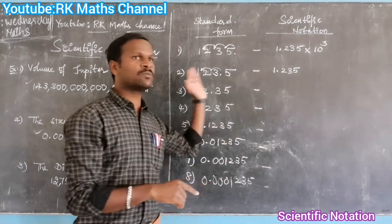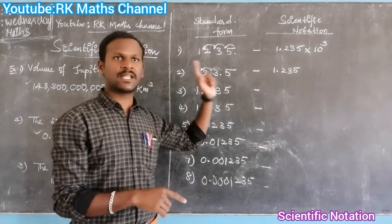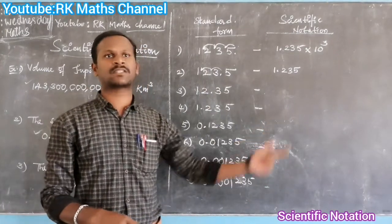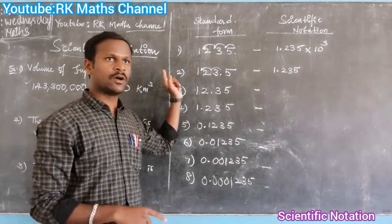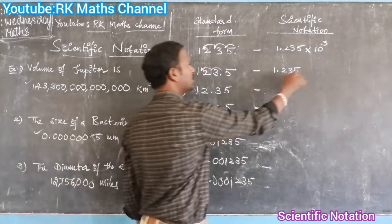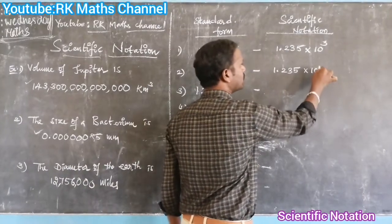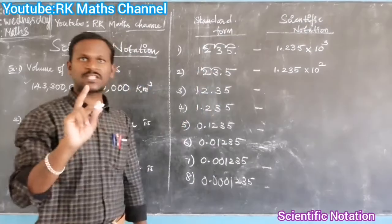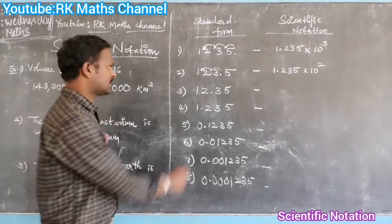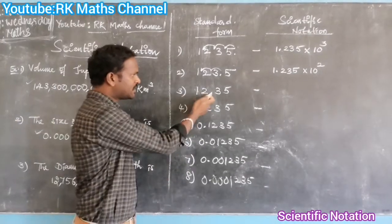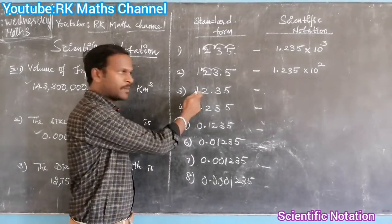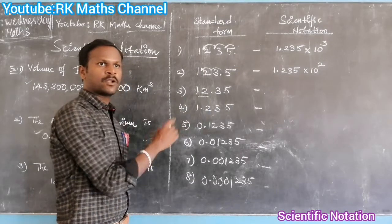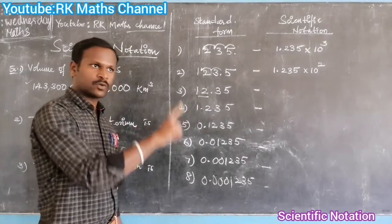If we move left side, that's positive power. If we move right side, that's negative power. Left side move — number two.